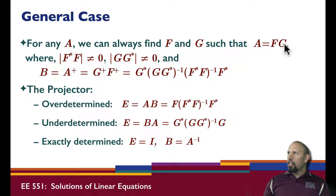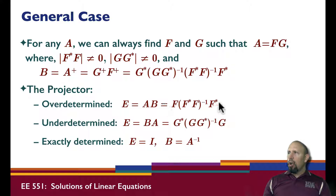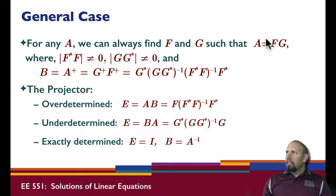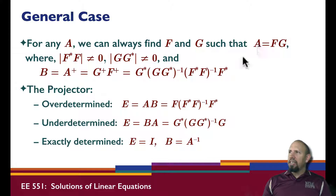The pseudo-inverse of G has one expression, and the pseudo-inverse of F has another. In the over-determined case, the projector AB is given by an expression determined only by F. The range of F is the range of A, since F spans the same space, so the range of E equals the range of F equals the range of A. In the under-determined case, E = BA is only a function of G, where we're concerned with the null space of the matrix.